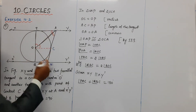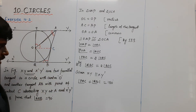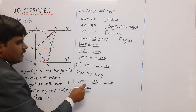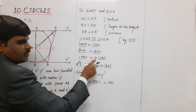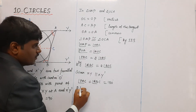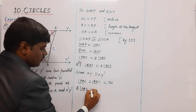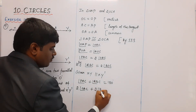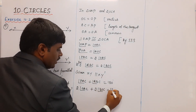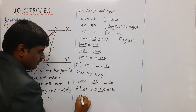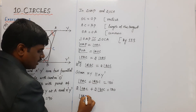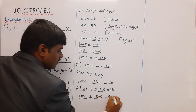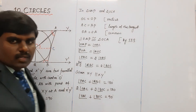Substituting, we get 2 times angle AOC plus 2 times angle BOC equals 180 degrees. Dividing both sides by 2, angle AOC plus angle BOC equals 90 degrees.